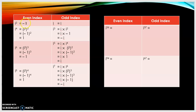For even index, start with i squared equals negative 1. For i to the power of 4, we change it to (i²)², because 2 times 2 is 4, and i² is negative 1, so negative 1 to the power of 2 is positive 1. Moving on to i to the power of 6, in the bracket we put i squared to the power of 3, because 2 times 3 is 6. So i² is negative 1, and negative 1 to the power of 3 is negative 1.